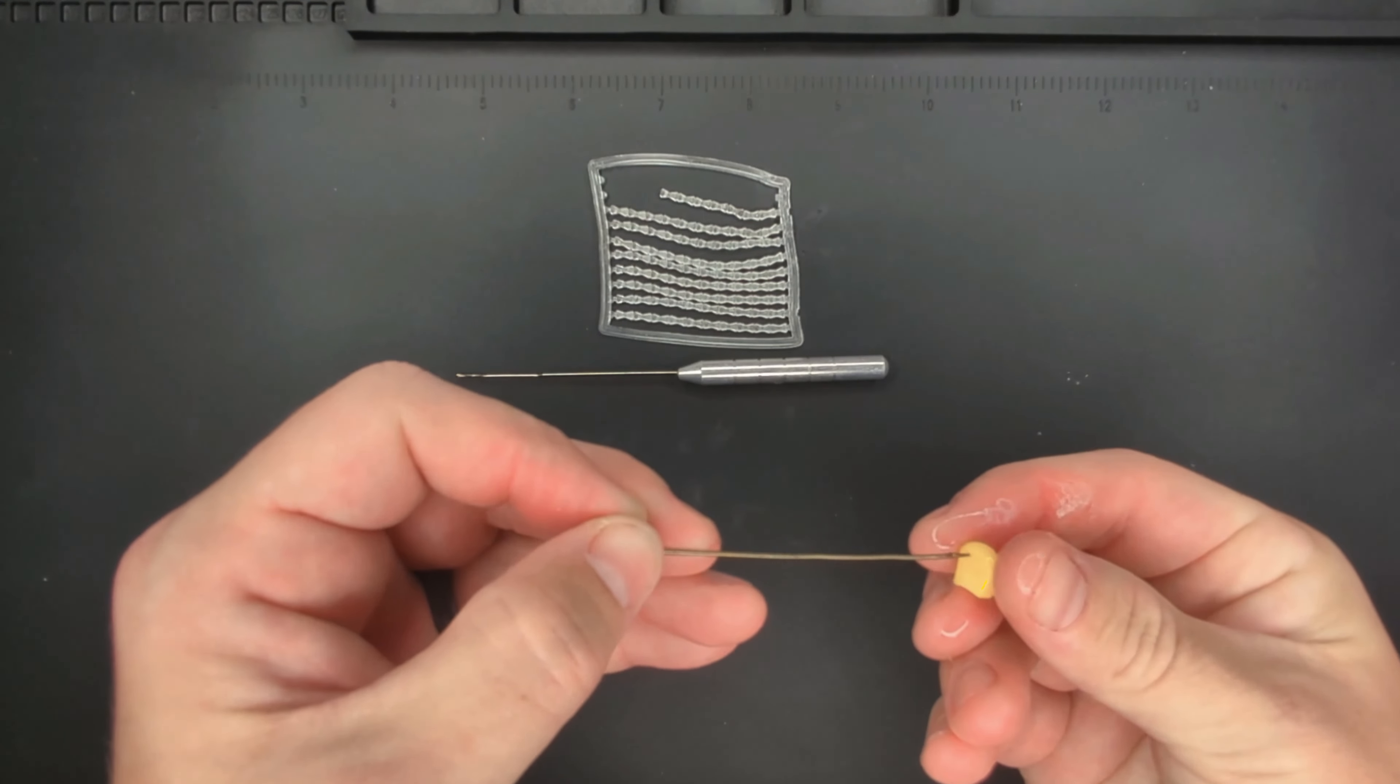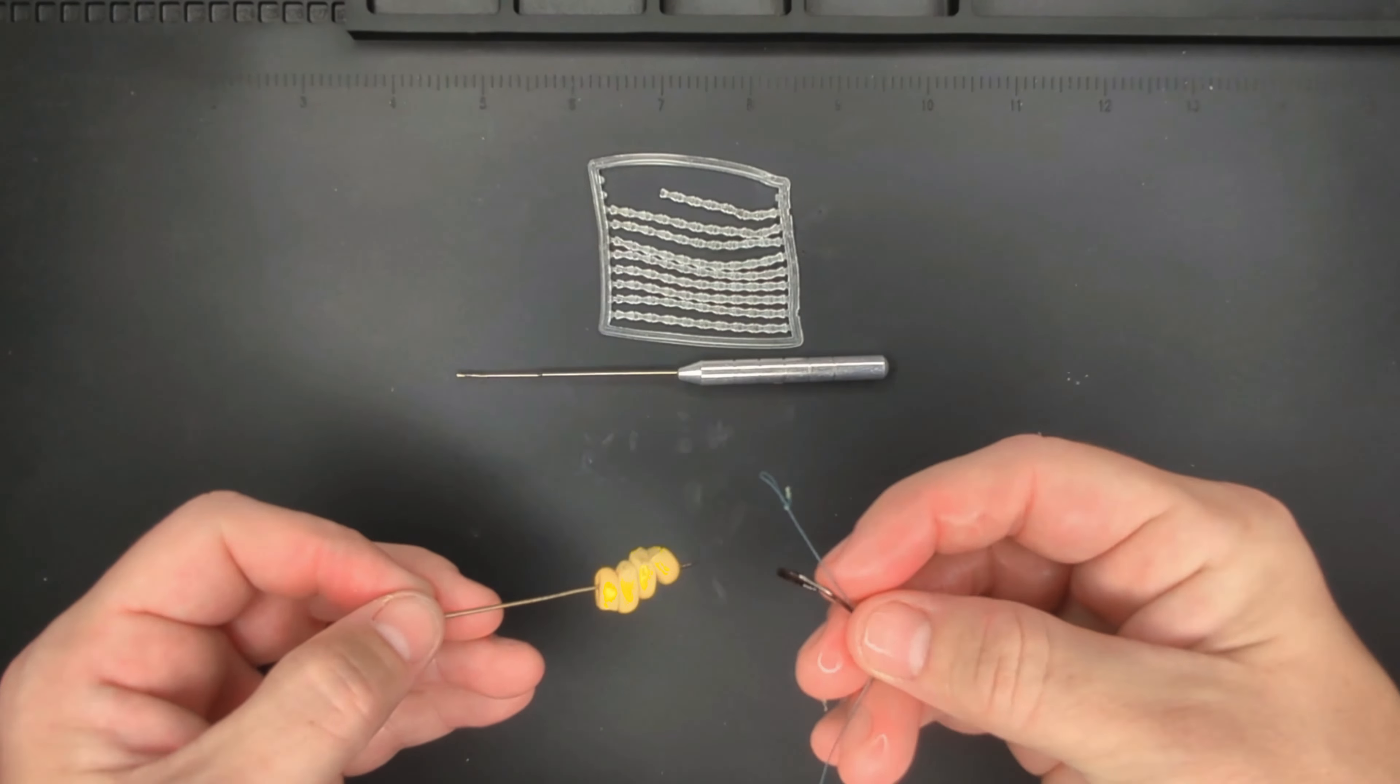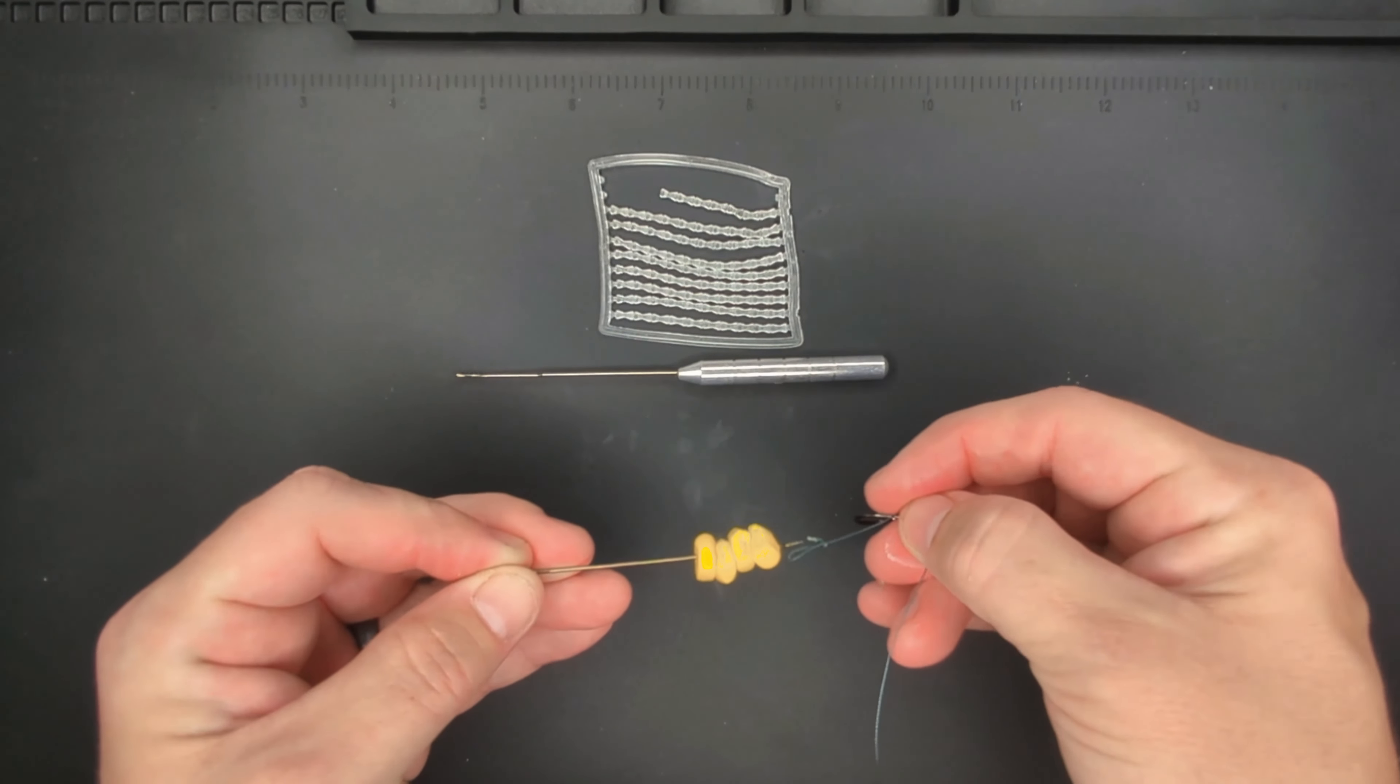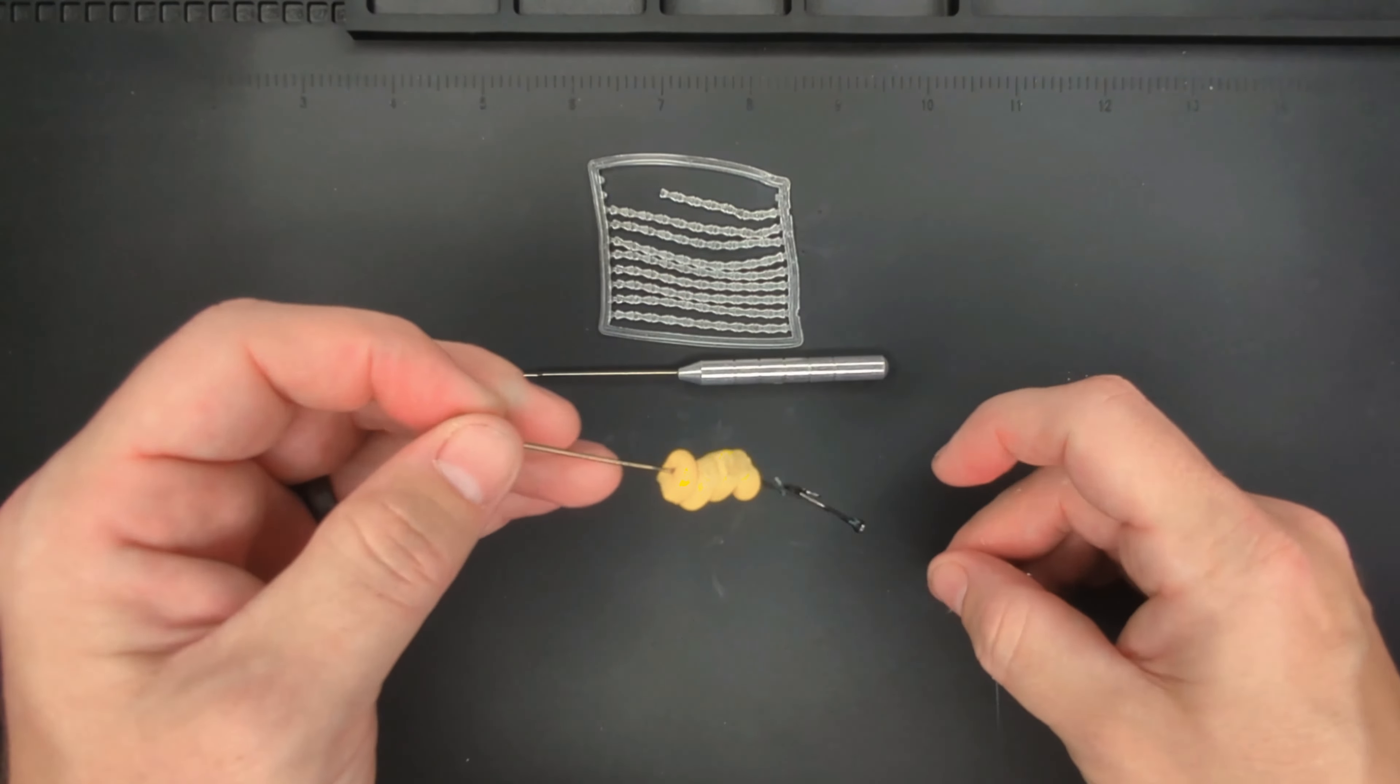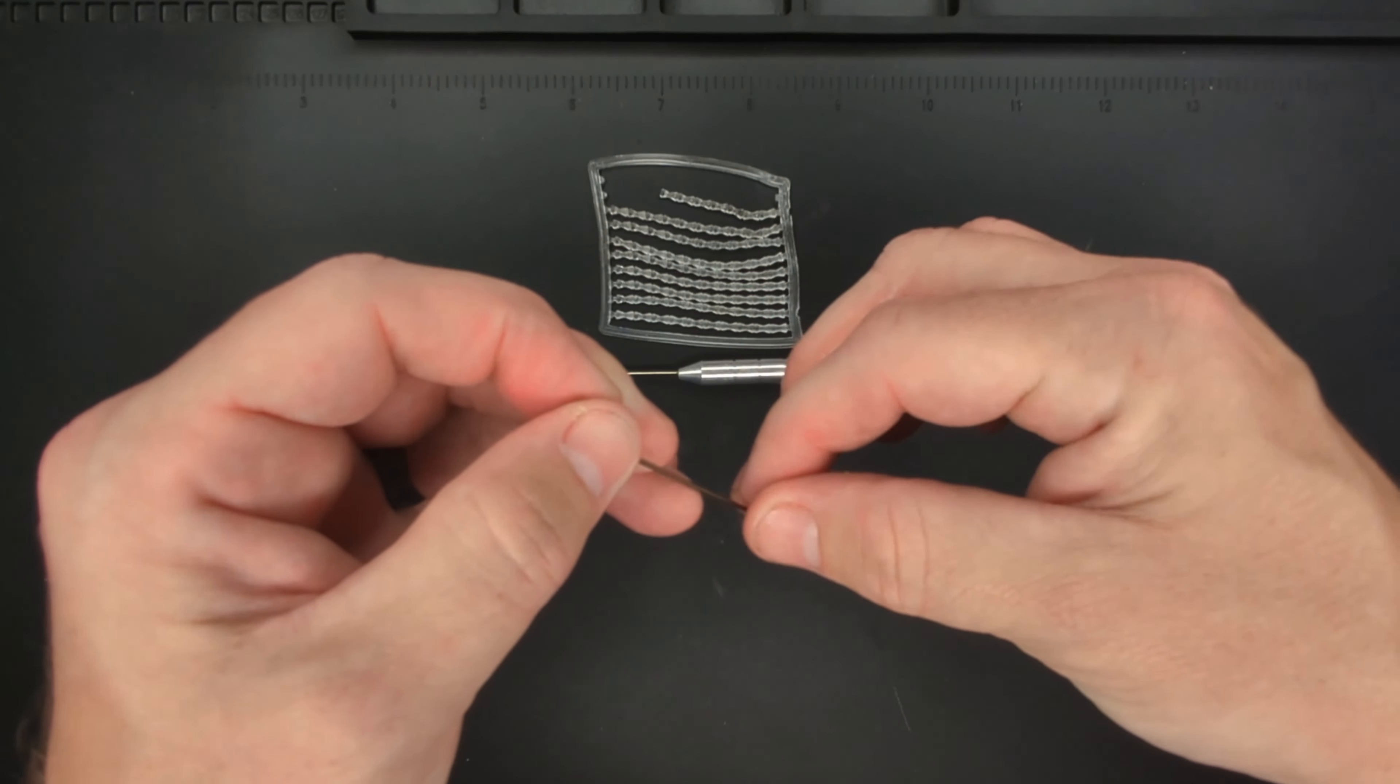Now take your hook, thread your bait on, take your loop, hook it on, and push the bait onto the line.